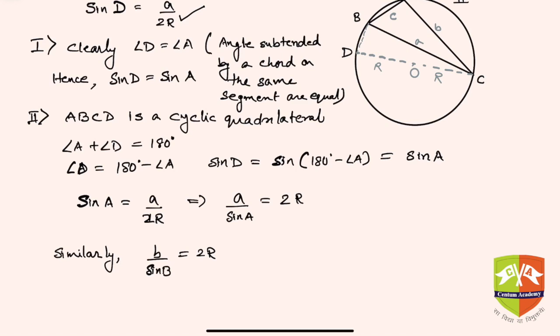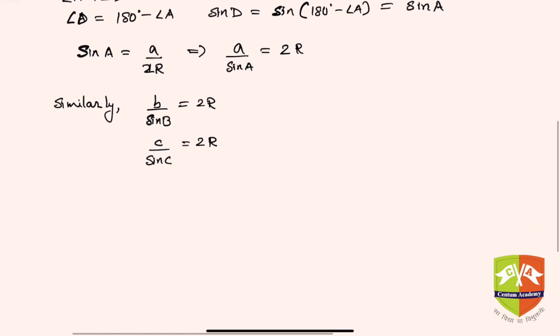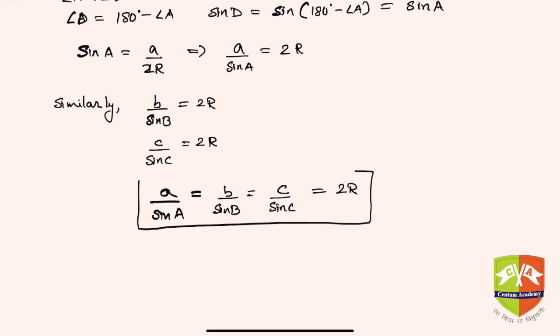So hence, in a nutshell, I can say in any given triangle, a upon sine A will be equal to b upon sine B, and this will be equal to c upon sine C, and all of them are equal to twice the circum radius. So this is what the result is.